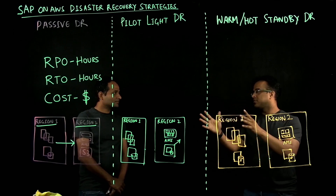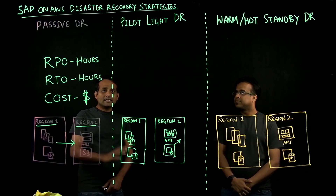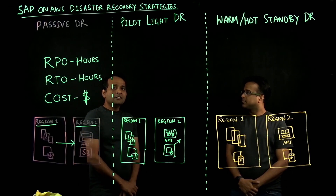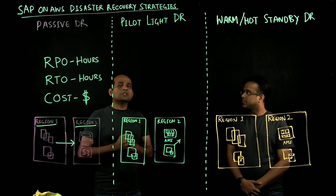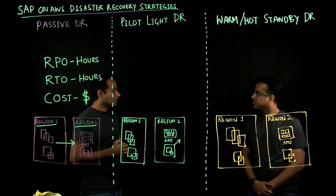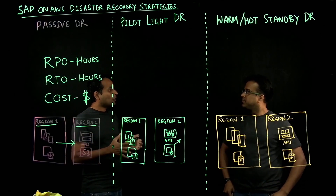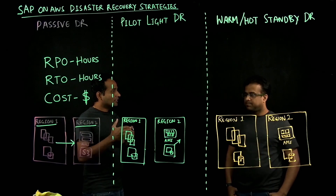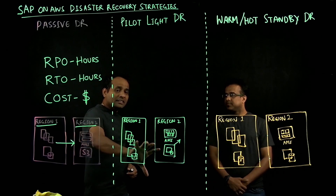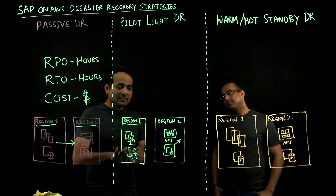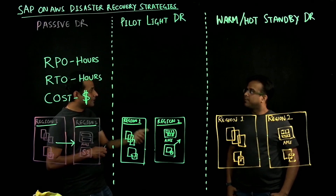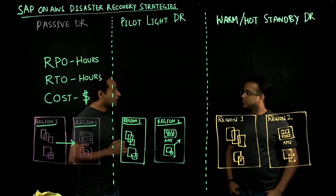What about Pilot Light DR? How does this differ from the backup restore methodology? The second pattern is Pilot Light DR. In this method, you identify the critical components for your application. If it is an SAP application, the database is where your customer data is going to reside. It is very important that you do not lose any data in any unplanned, unexpected event. In this method, you have your systems running in Region 1.